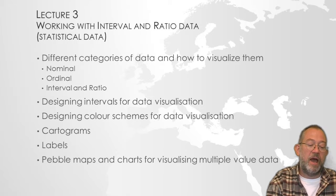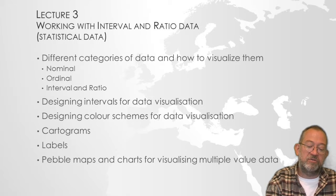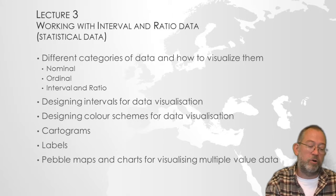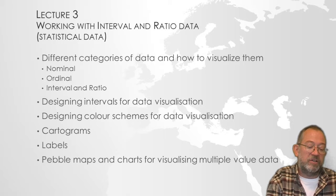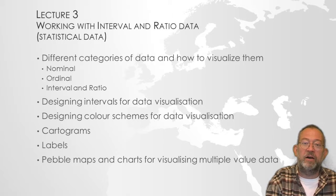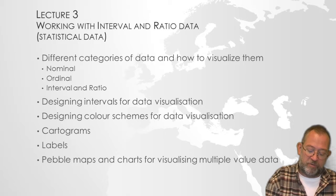In Lecture 3, we will be looking at what is called interval and ratio data — basically statistical data. We will understand different types of data and how data can be characterized and visualized. The classic classification distinguishes between nominal data, ordinal data, and interval and ratio data. We will look at how to do intervals for data visualizations, what the creation of intervals means for how the map will look, different color schemes, cartograms — a special type of map where the area is proportional to the size of the attribute being mapped — putting labels onto the map, and bubble maps and other visualizations of multiple-value data.